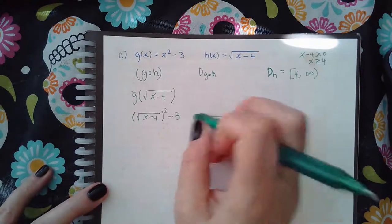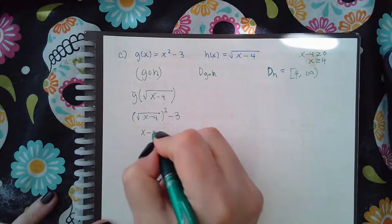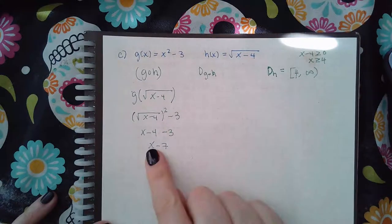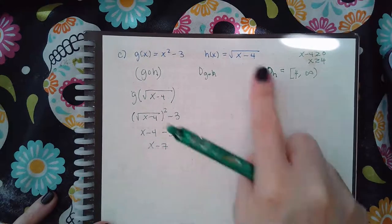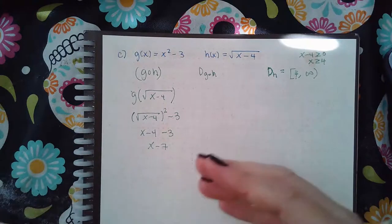And actually, you don't need to do that at all. If I cancel this x minus 4, and then my minus 3 on the outside, and then I get x minus 7. You don't need to worry about that. Because I'm already doing the domain of the inside function, it already kind of takes care of itself.